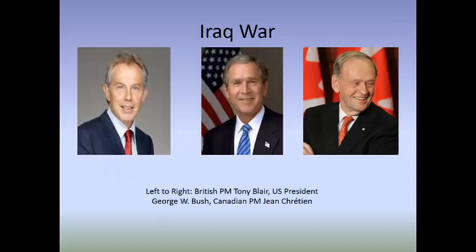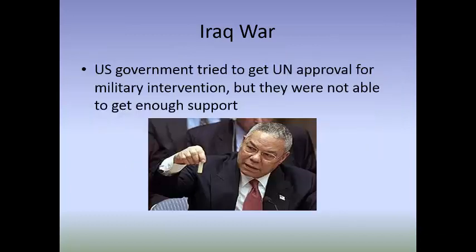The main players in the Iraq War were US President George W. Bush, British Prime Minister Tony Blair, and Canadian Prime Minister Jean Chrétien. The US government tried to get UN approval for military intervention. Weapons inspectors were sent back into Iraq to look for nuclear, chemical, and biological weapons - and found nothing. The US argued the weapons were hidden elsewhere, but the UN did not support this claim and said there was insufficient evidence to authorize an invasion of Iraq.